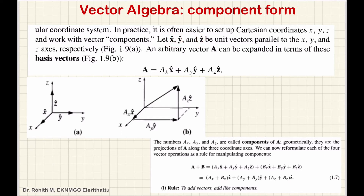These unit vectors all have a length of 1 unit. These are the unit vectors — we have basis vectors, also called base vectors, along the basis directions. We have the basis vectors.